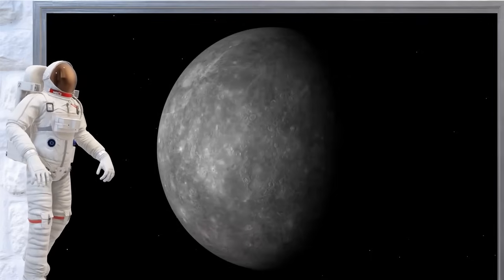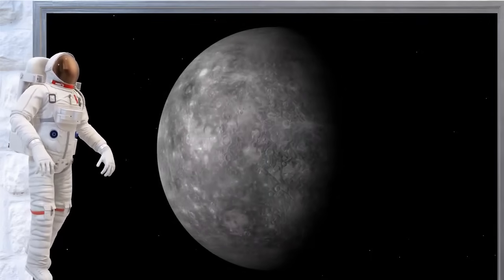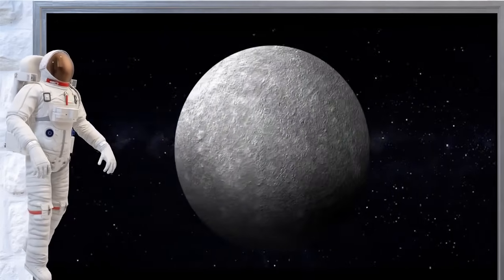Mercury is the first one, closest to the Sun. It's a small, rocky planet and it's very hot during the day but super cold at night.